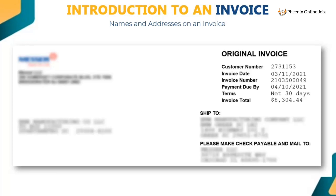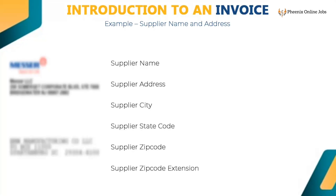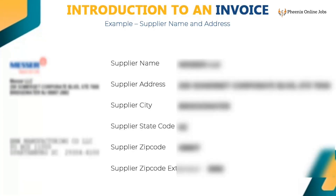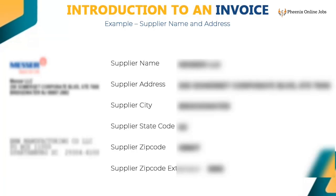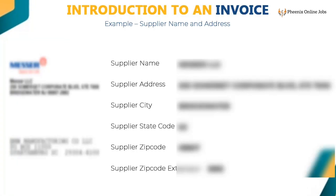Let us see what to key for supplier name and address. Supplier name: Messer LLC. Supplier address: 200 Somerset Corporate BLVD, STE 7000. Supplier city: Bridgewater. Supplier state code: NJ. Supplier zip code: 08807. Supplier zip code extension: 2862.